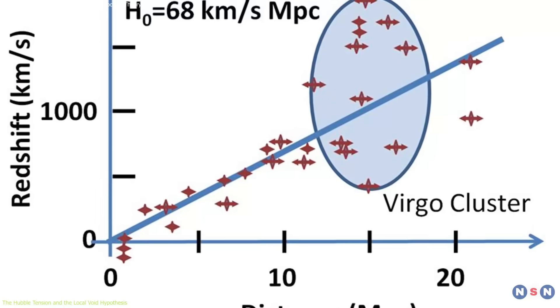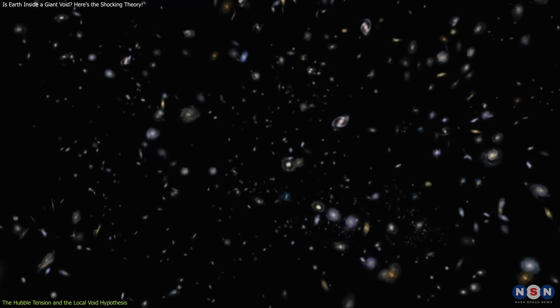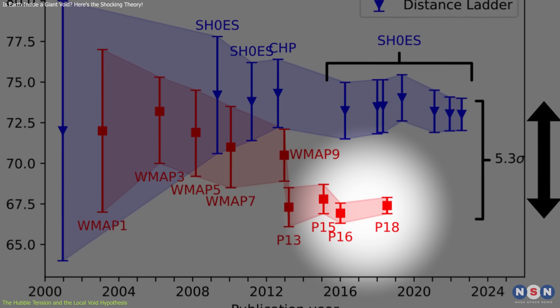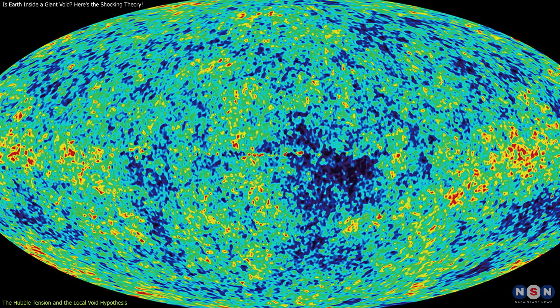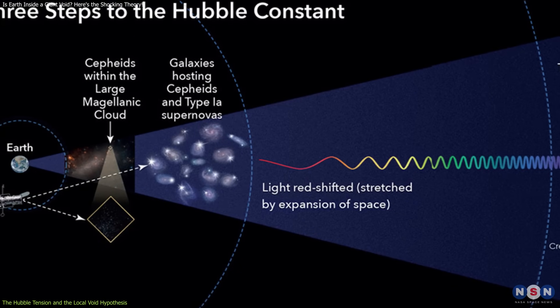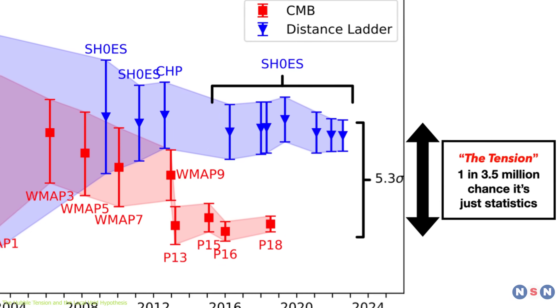The Hubble constant is central to cosmology as it determines how fast the universe is expanding. Measurements of the Hubble constant have been taken from both the early universe using the Cosmic Microwave Background and from local observations using nearby galaxies. However, these two methods have led to conflicting results.